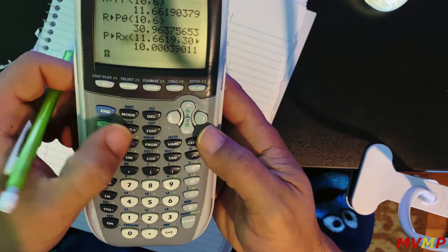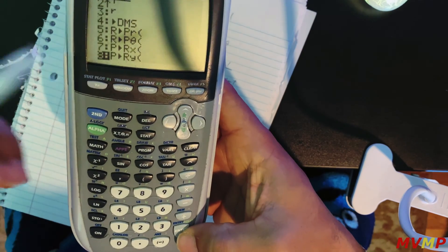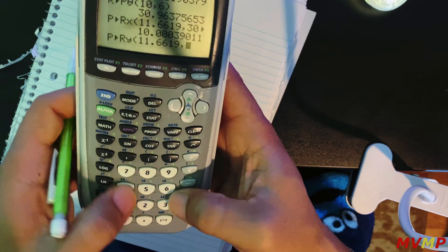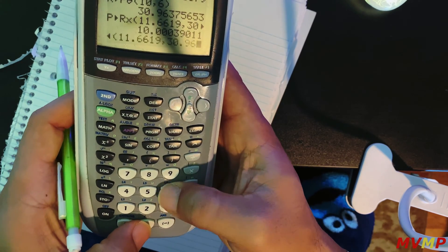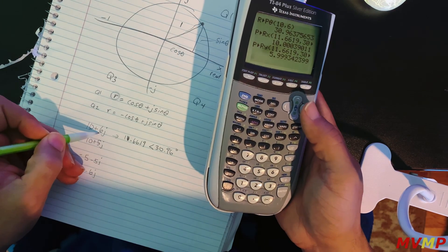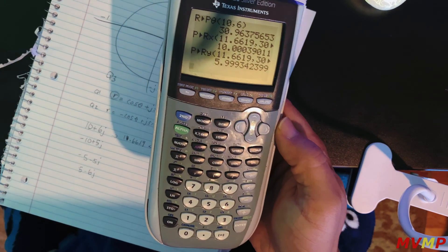And then you can do the same again. Press number 8 which is your y value. 11.6619 comma 30.96. There you go. You round that up and you get your imaginary part. So those are ways to do that.